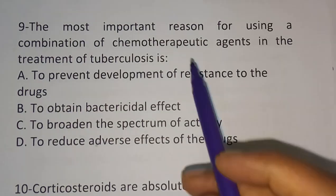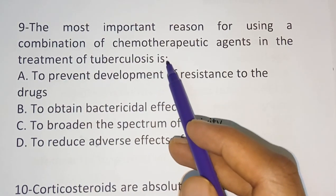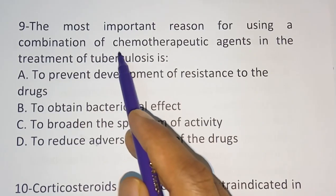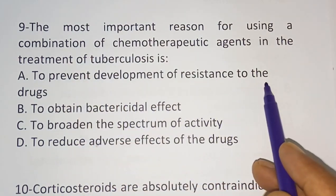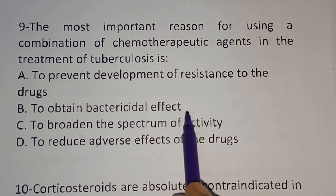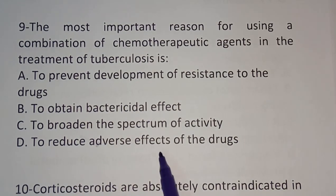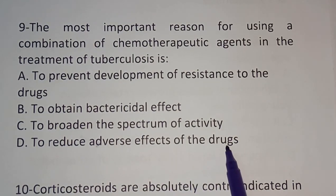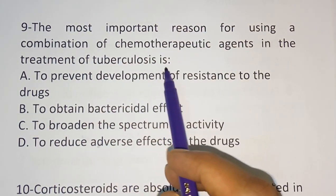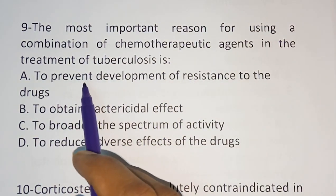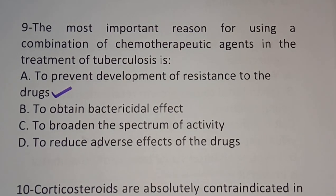Ninth question: the most important reason for using a combination of chemotherapeutic agents in the treatment of tuberculosis is — option A: to prevent development of resistance to the drug, option B: to obtain bactericidal effect, option C: to broaden the spectrum of activity, option D: to reduce adverse effects. The correct answer is option A — to prevent development of resistance to the drugs.